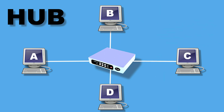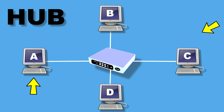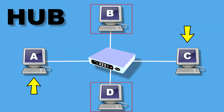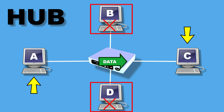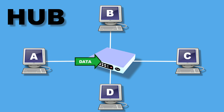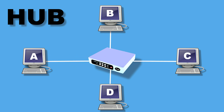Hub has many disadvantages, one of them being waste of bandwidth. So even if this PC wants to send data to only one specific PC in the LAN network, all of the computers also receive the data even though that data was not meant for them. This creates not only a security concern but also unnecessary traffic on the LAN network, which wastes bandwidth.